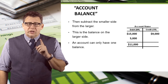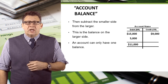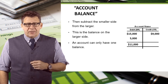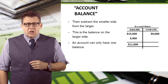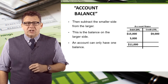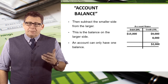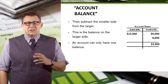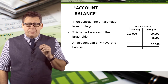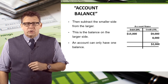An account can have only one balance. In this example, debits are $20,000 and credits are $9,000, so the balance in this account is an $11,000 debit. In another example, debits are $15,000 and credits are $17,000, so the balance in this account is a $2,000 credit.